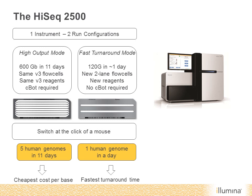So 120 gigabases of data from a new two-lane flow cell requires new reagents, but we have been able to integrate cluster generation on the instrument itself — so for this fast turnaround mode, there is no need to use a cBot instrument to make clusters. You can switch between the two configurations at the click of a mouse: either running five human genomes in 11 days, or a human genome in a single day, which requires nothing more than putting on a different flow cell and selecting a box in software.